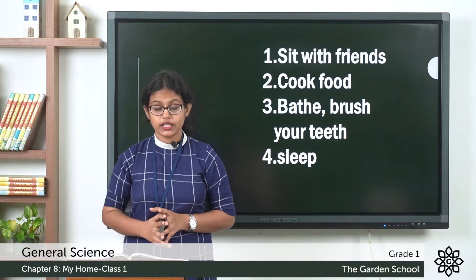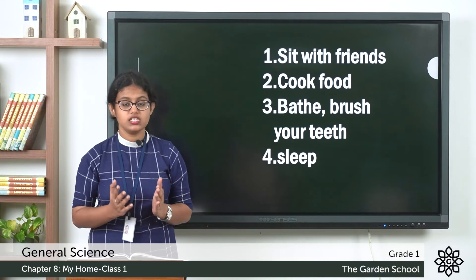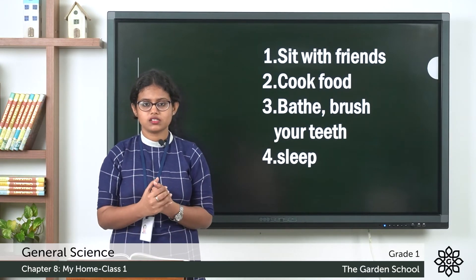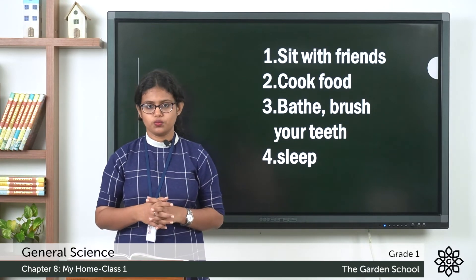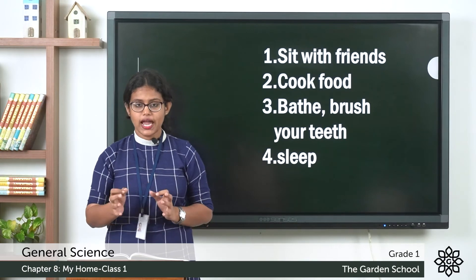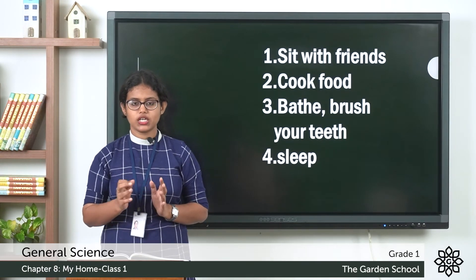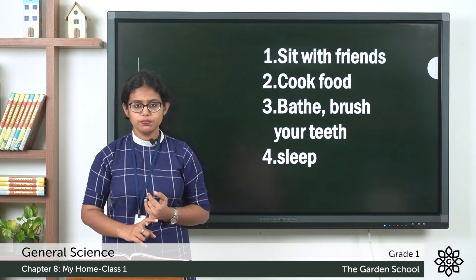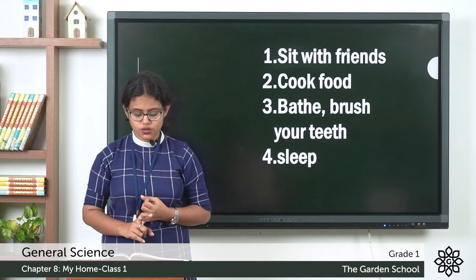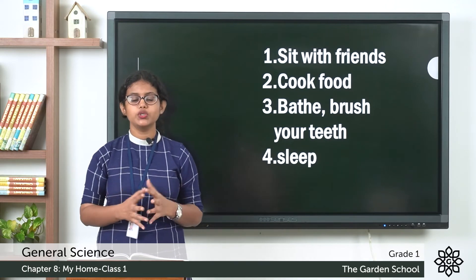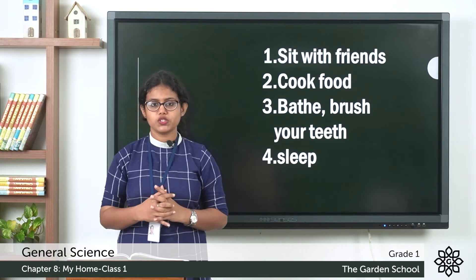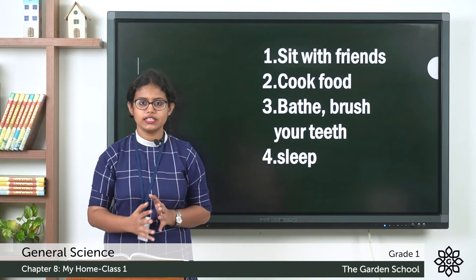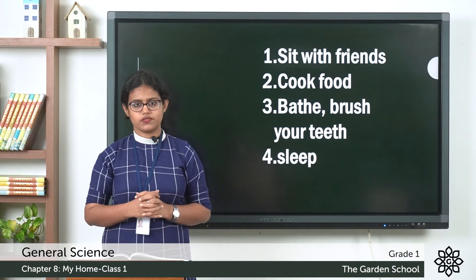What about the next one, D? You can see a bed, so that is your bedroom. Three activity options: sleep, listen to music, eat food. In your bedroom you sleep and take rest, so you can tick 'sleep'.